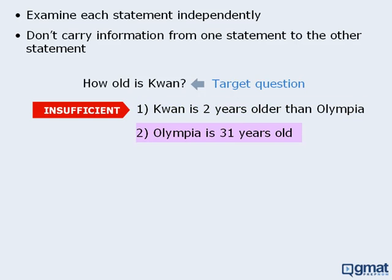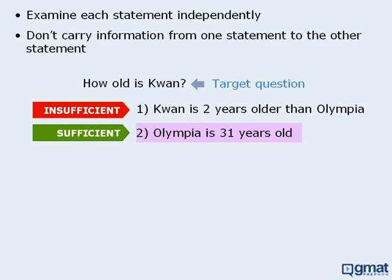Now on to statement 2. This statement tells me Olympia's age — that's exactly the information I needed. So statement 2 must be sufficient, which means the answer is B. Of course, this answer is incorrect. What happened here? We used information from statement 1 to help us determine whether statement 2 is sufficient. We can't do that. We must determine whether each statement alone is sufficient.